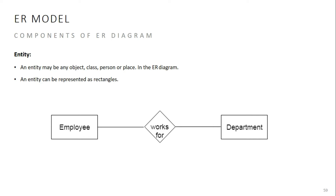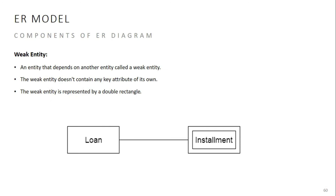In the ER diagram, we represent the employer and the entity. There is also a weak entity. The first type is the weak entity — an entity whose existence depends on another entity.